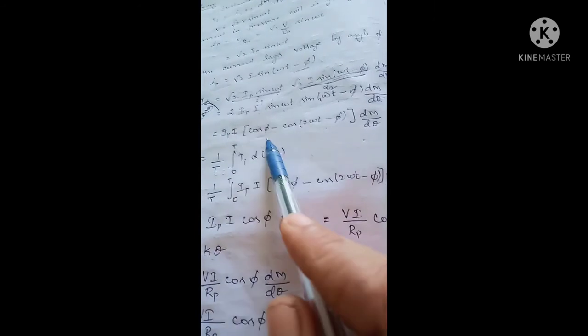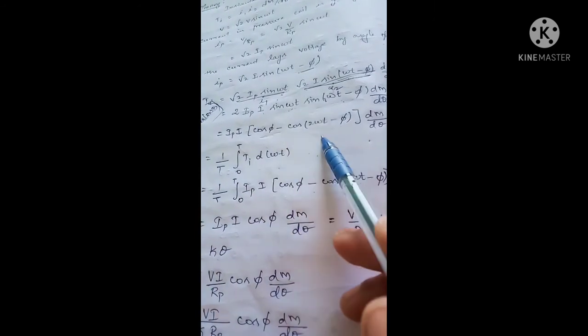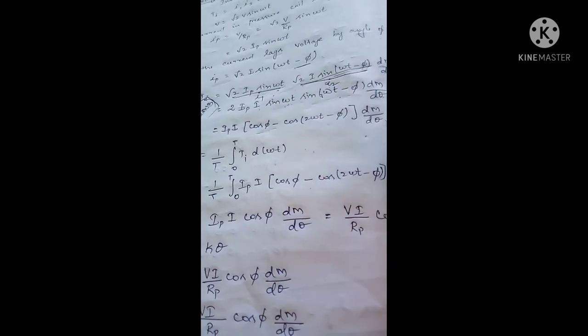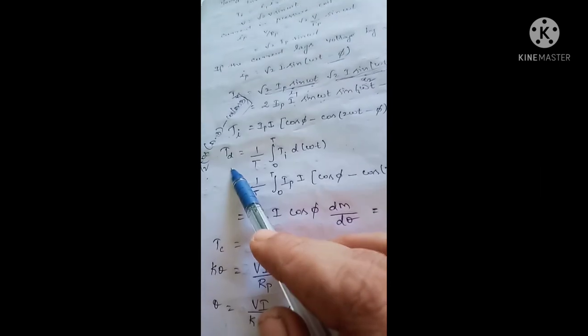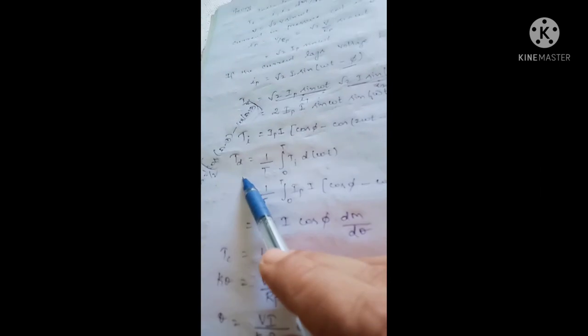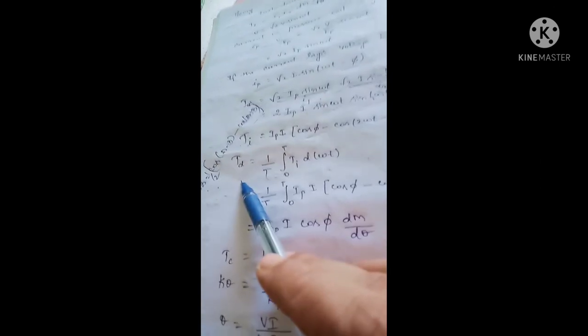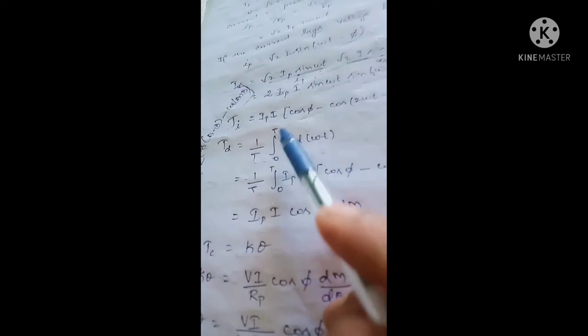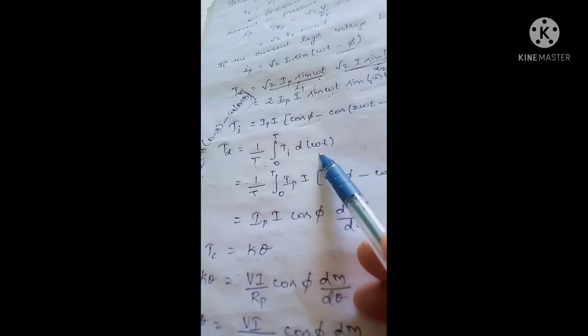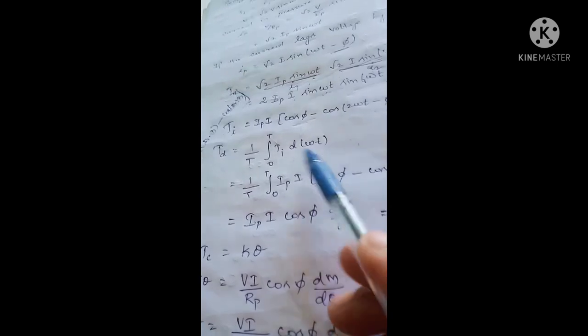This is the instantaneous torque equation: Ti = Ip · I · [cos φ − cos(2ωt − φ)] · dM/dθ. Now we need the torque for a time period 0 to T, so we integrate: Td = (1/T) ∫₀ᵀ Ti · d(ωt).